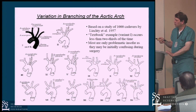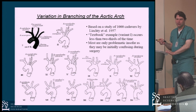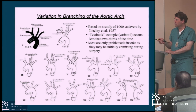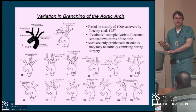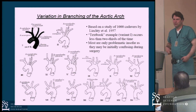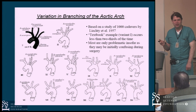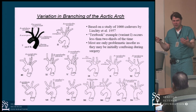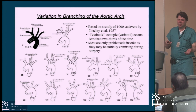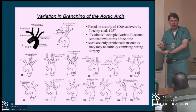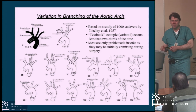I've seen the truly aberrant right subclavian coming off the descending aorta once in ten years, and it is a real bear to get around. You could spend an hour trying to get the catheter to come up around and over, and you're not going to be able to do it in any reasonable way. If you encounter this, the right thing to do is just go to the left arm. From the patient's perspective, a wrist needle poke is basically like an IV poke, so switching sides is not a big deal and will save time in the American healthcare system.